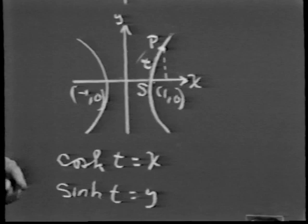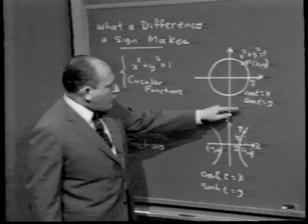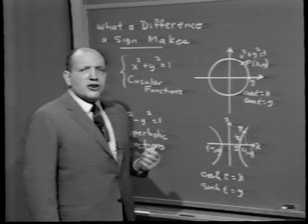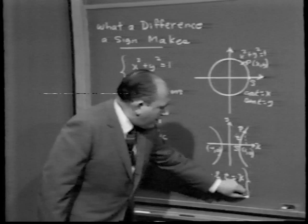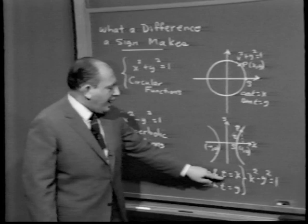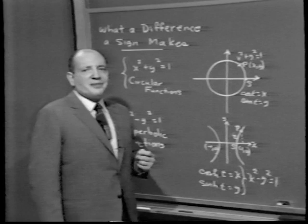In the same way that x squared plus y squared equals 1 gave us the circular identity — sine squared t plus cosine squared t equals 1 — the fact that x squared minus y squared equals 1 gives us the hyperbolic identity: cosh squared t minus sinh squared t equals 1. Notice great similarities and great differences.